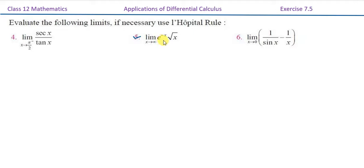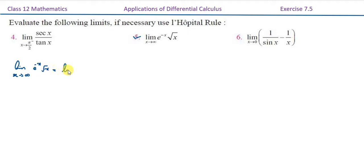In this question, we first check the indeterminate form. Here, e^x is in the denominator. So, limit x tends to infinity of e^(-x) into root x is equal to limit x tends to infinity of root x divided by e^x.